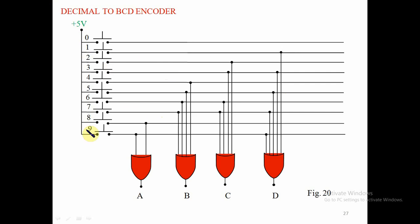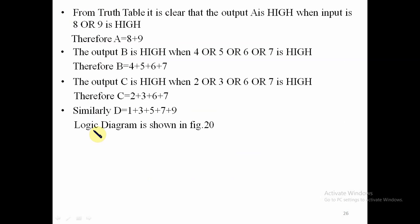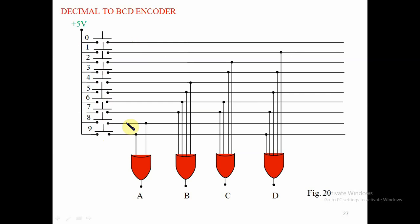Using these equations — A = 8 + 9, B = 4 + 5 + 6 + 7, and so on — we draw the logical diagram. Given a 5V supply with switches 0 to 9: for output A, pins 8 and 9 are connected with an OR gate. For output B, pins 4, 5, 6, and 7 are connected. The remaining pins are connected similarly.